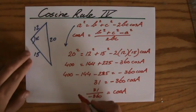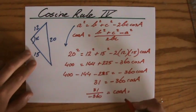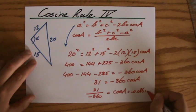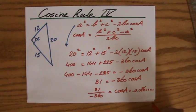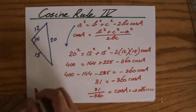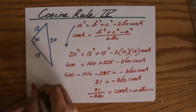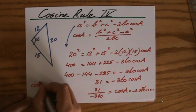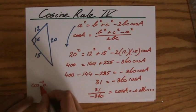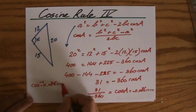31 divided by negative 360. And, if you like decimals, and I'm pretty sure you do, it says minus 0.086 and then loads of ones. But, that is the cosine of a. That is not a itself. Because, to find a, what do I have to do? I have to do the inverse cosine. I have to find the angle of minus 0.086 in all those ones.